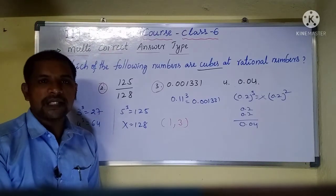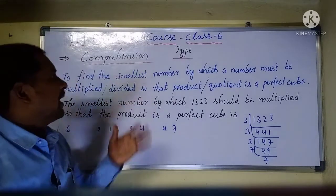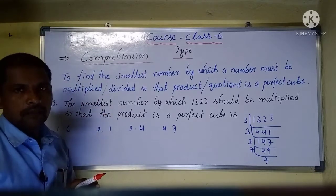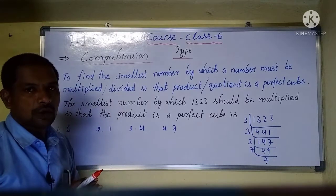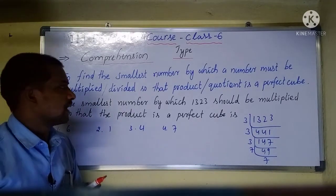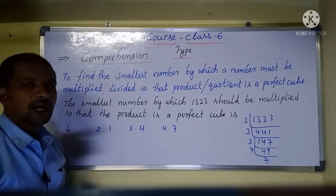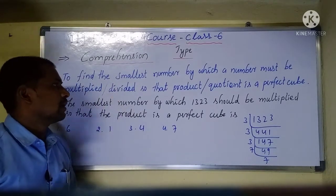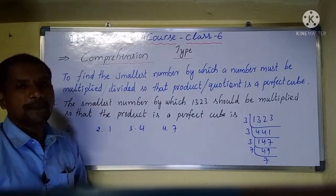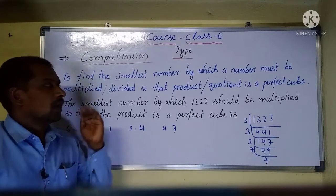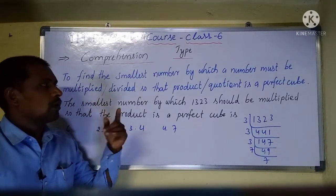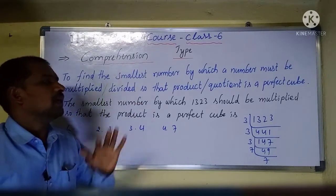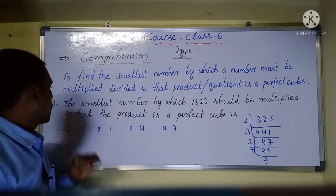Now let us discuss the comprehension type. In comprehension type, they will give one statement and based on that statement we should answer the questions — here only one correct answer will be there. The statement is: to find the smallest number by which a number must be multiplied or divided so that the product or quotient is a perfect cube. Let us go to question number 23.